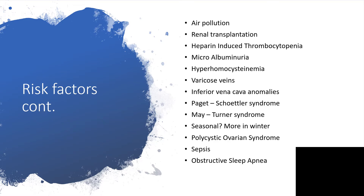Additional risk factors include air pollution, renal transplantation, heparin-induced thrombocytopenia, microalbuminuria, hyperhomocysteinemia, and varicose veins — if not properly attended to, varicose veins can lead to deep vein thrombosis and from there pulmonary embolism. Paget-Schroetter syndrome, May-Turner syndrome, and seasonal variation are also notable — DVT is more common in winter. Polycystic ovarian syndrome, sepsis, and obstructive sleep apnea are also included.